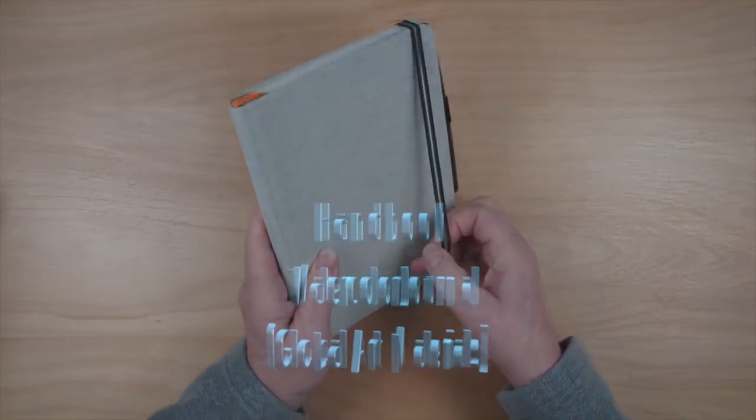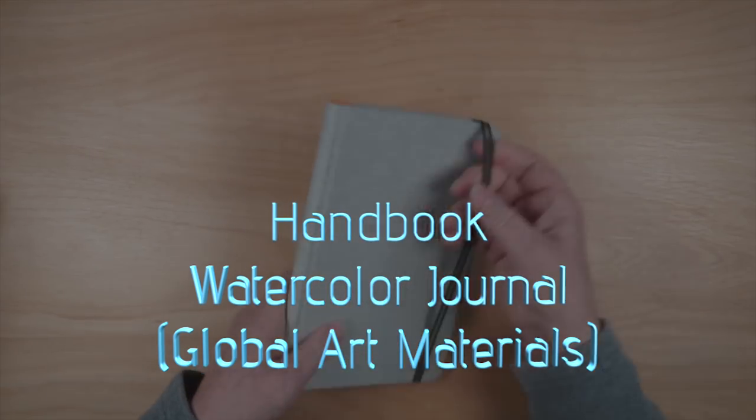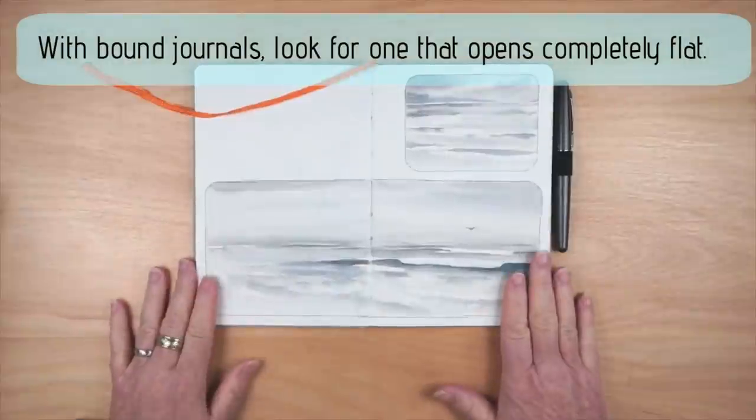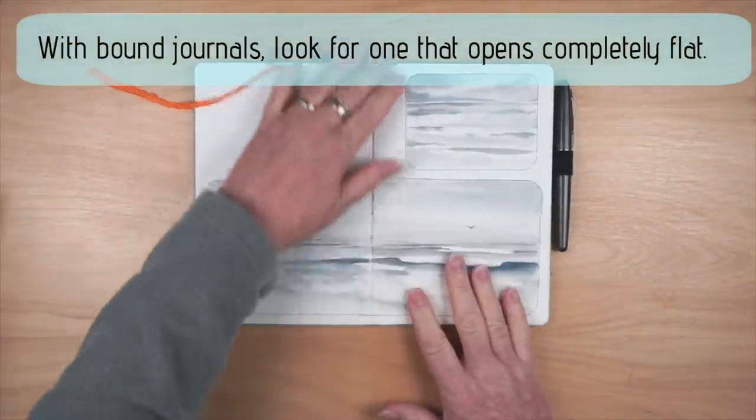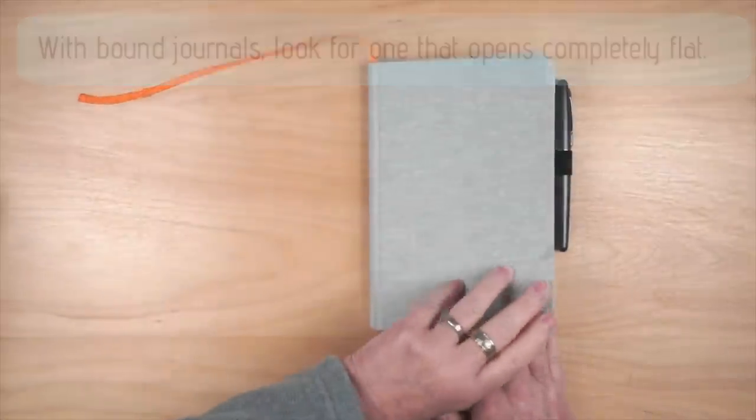First up is the Handbook watercolor journal. One of the nice features of this journal and all of the bound journals I'm going to show you is that it lays completely flat. This means I can paint or draw right across the binding, so this gives me a larger work area in a smaller package.